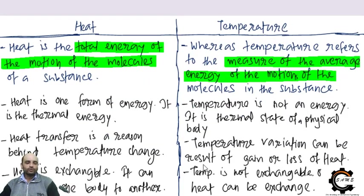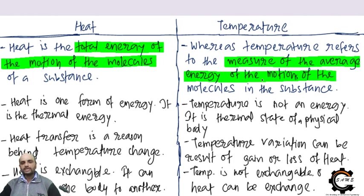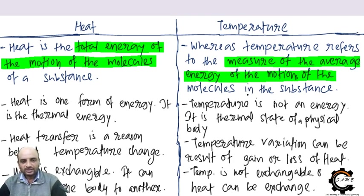Now I will differentiate between heat and temperature. The first difference: heat is the total energy of motion of the molecules of a substance — it talks about total energy. Temperature refers to the measure of the average energy of the motion of the molecules in a substance — it talks about average energy.